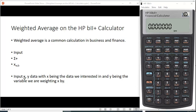We're going to put in the X and Y data, with X being the data we're interested in and Y being the variable we're weighting X by. You got to do it in the right order, otherwise you're going to get the wrong calculation or you're going to be weighting it incorrectly.